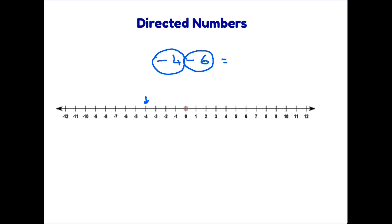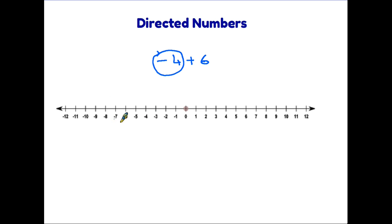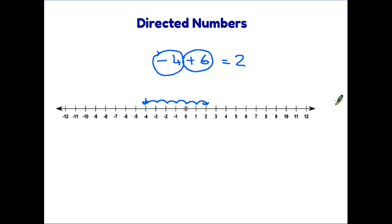Let's once again change the sum a little bit and this time we will call it minus four plus six. Again we are starting on minus four which is here, but this time the next number is a plus six, and we know that pluses go in this direction — one, two, three, four, five, six. Therefore we end up on positive or plus two.